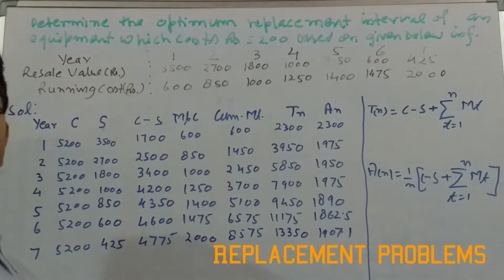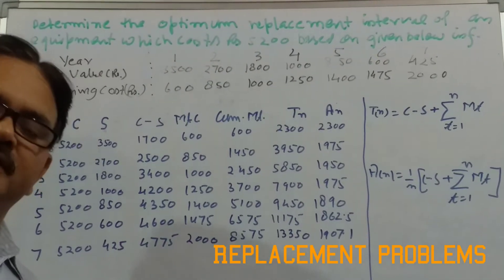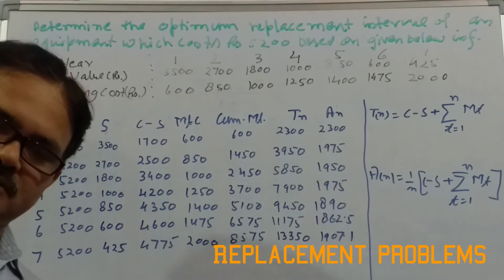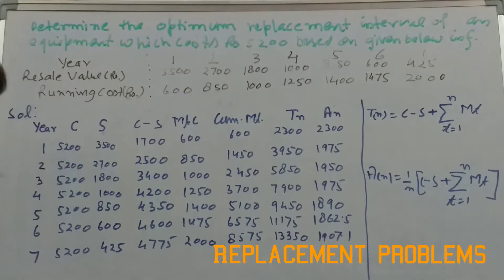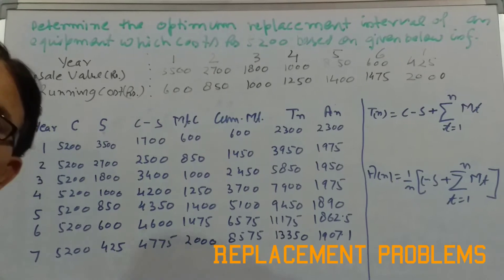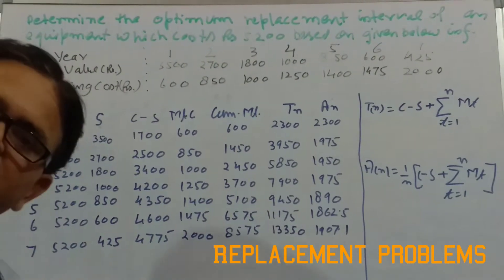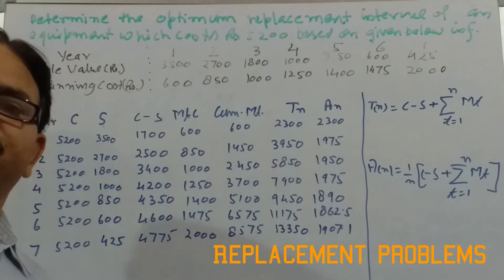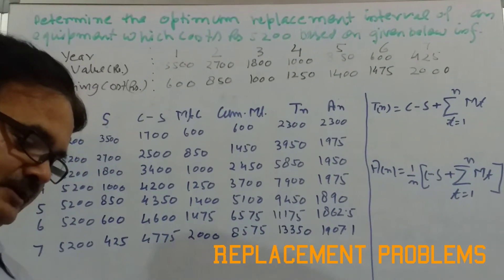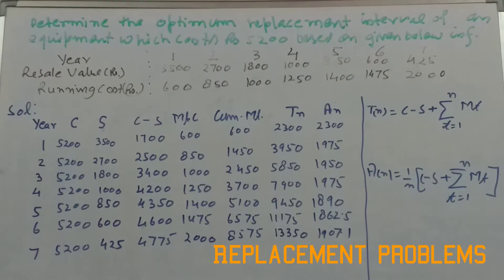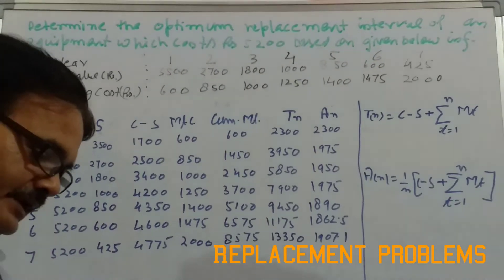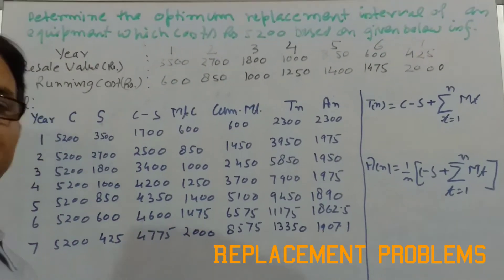There will be three situations in which replacement is discussed: one, the replacement policy for equipment which deteriorates gradually; another one, the replacement policy for the equipment or items that fail suddenly; and staff replacement.